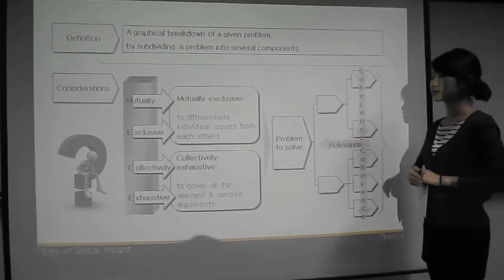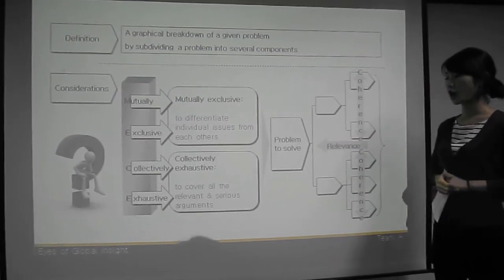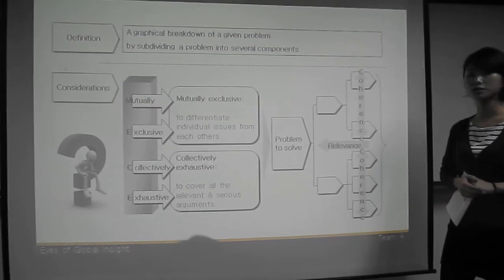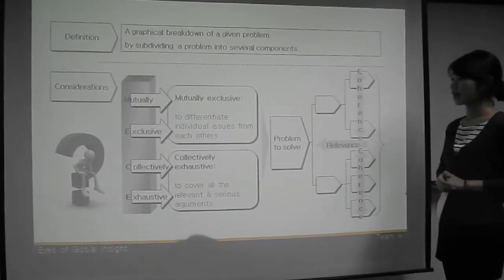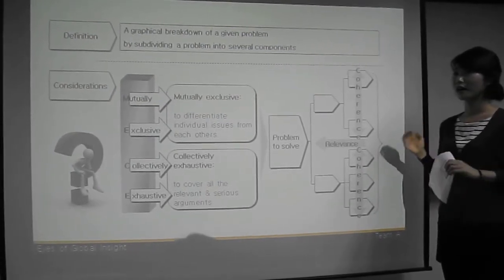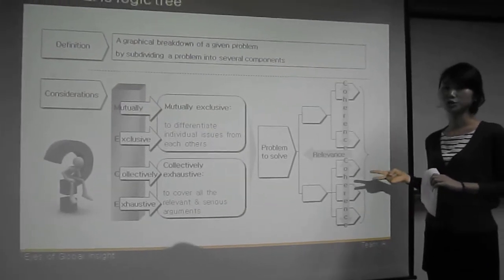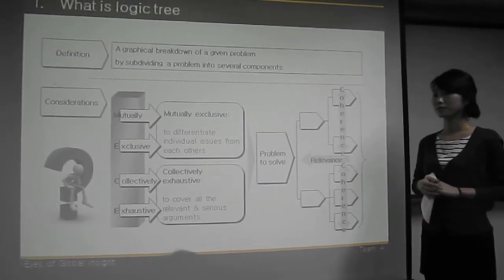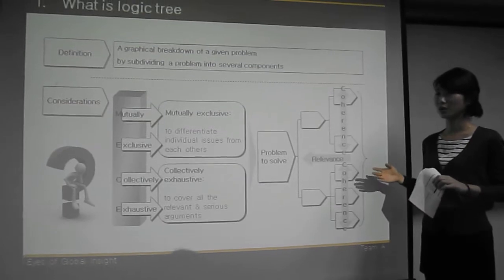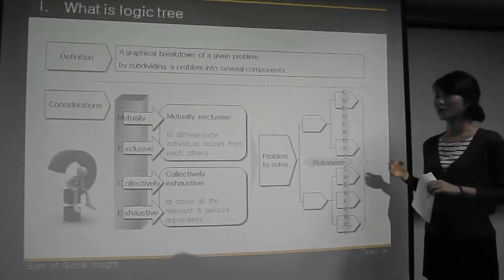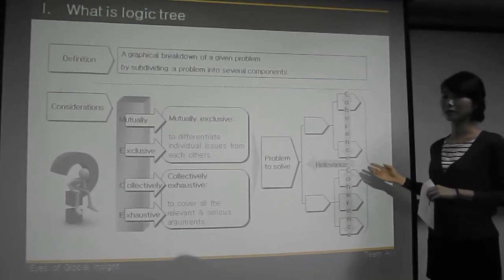Next one is collectively exhaustive. It is to cover all the relevant and serious arguments. That means you cannot miss any one or two issues because you might end up with an incomplete Logic Tree.